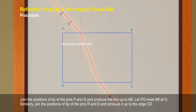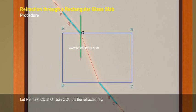Join the position of tip of the pins P and Q and produce the line up to A.B. Let P.Q. meet A.B. at O. Similarly, join the positions of tip of the pins R and S and produce it up to the edge C.D. Let R.S. meet C.D. at O'. Join O.O'. It is a refracted ray.